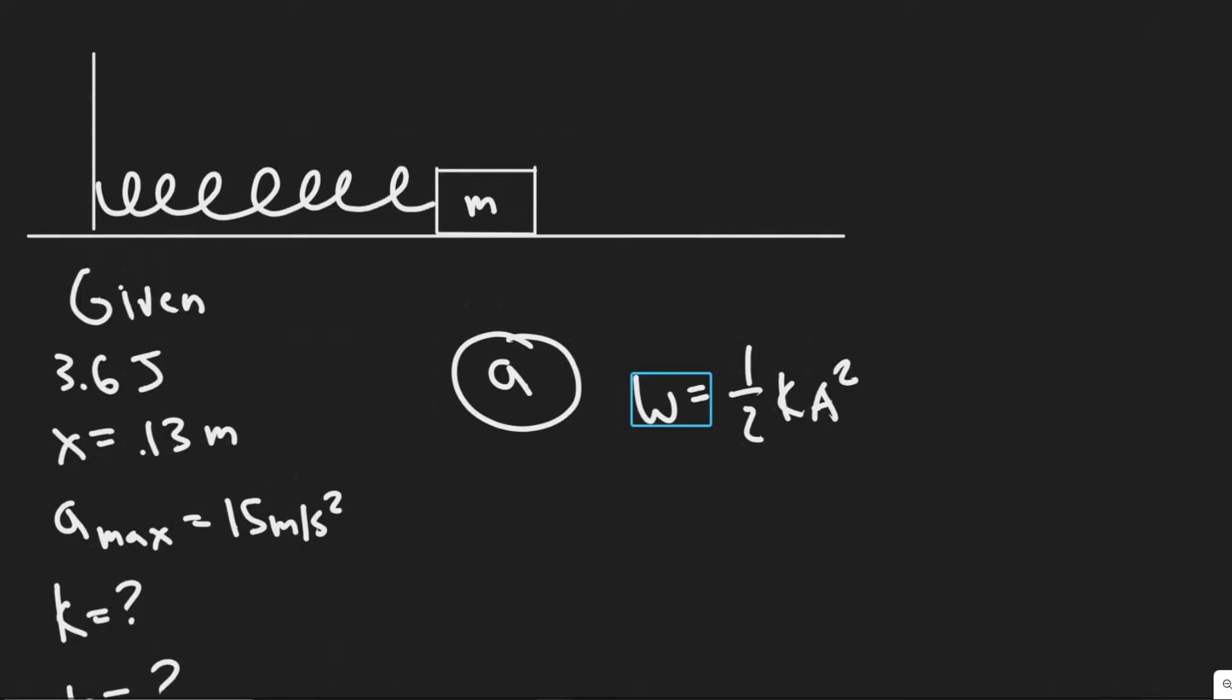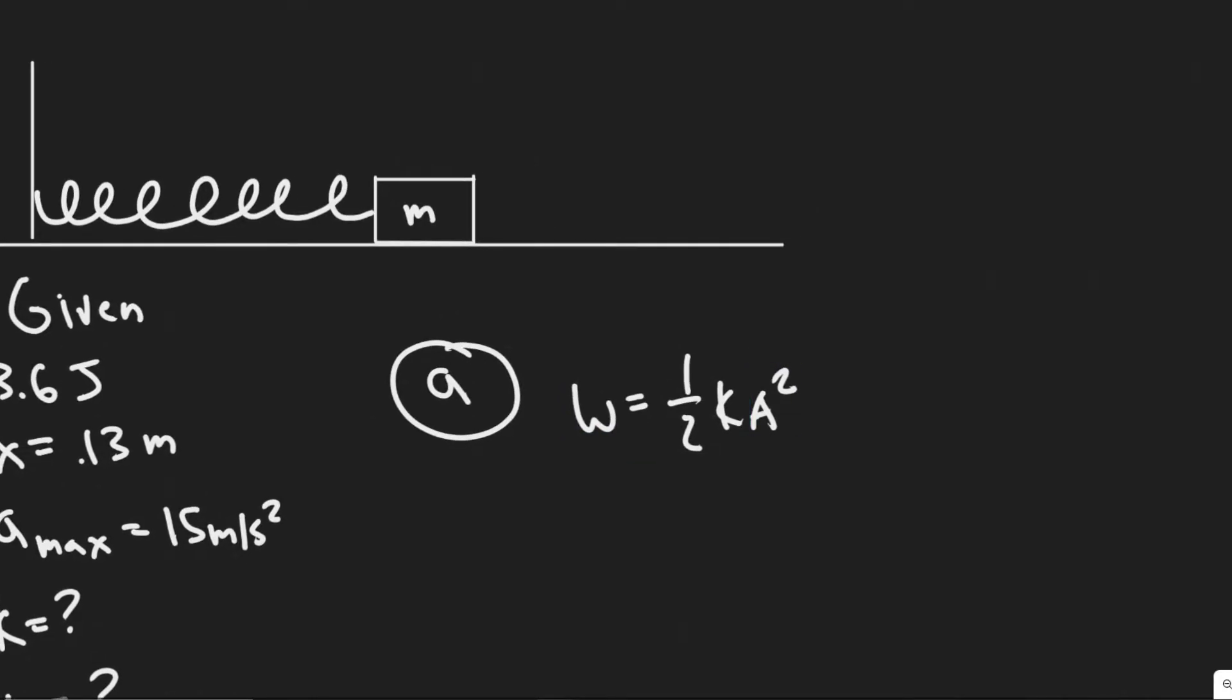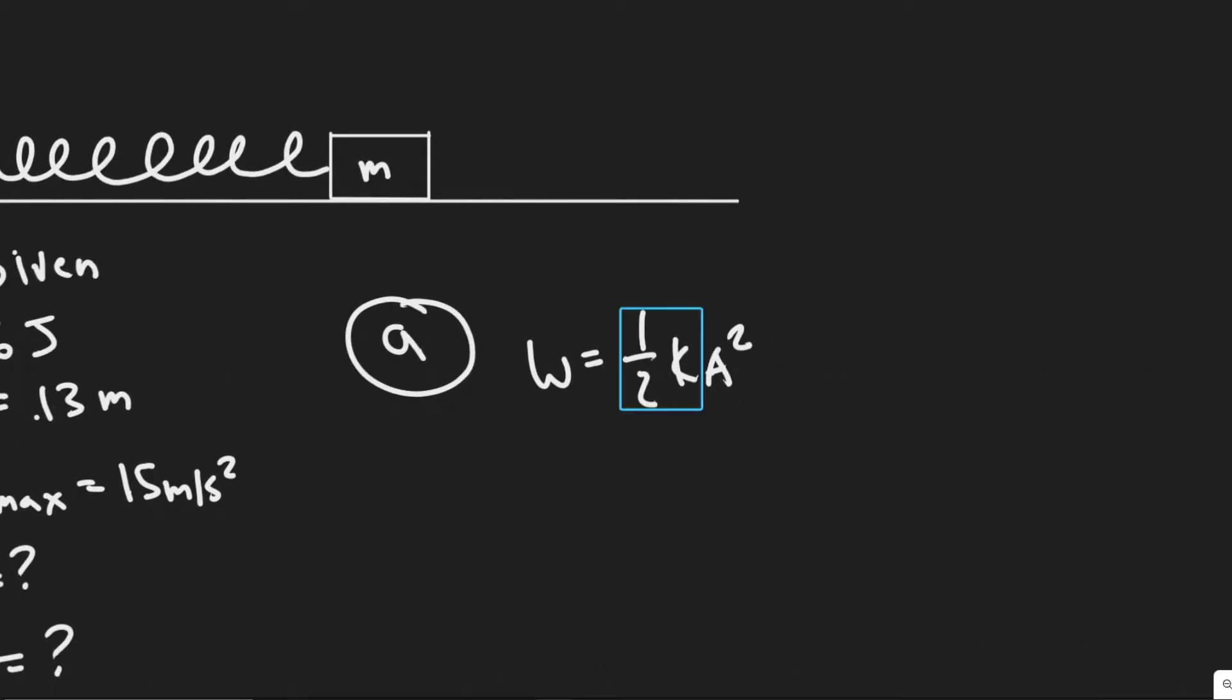I know the amount of work this is going to take is 3.6 joules and the distance I'm going to be compressing it, which is the amplitude. So I could just easily solve for K by using this formula.